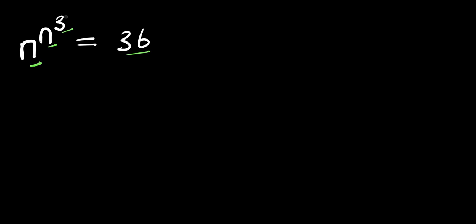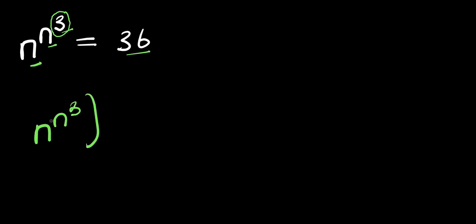Now, if you observe, we have 3 here at the exponent. So what we can do would be to raise each part of this equation to the power of 3. I have n to the power of n to the power of 3, and this is raised to the power of 3, and this equals 36 to the power of 3.